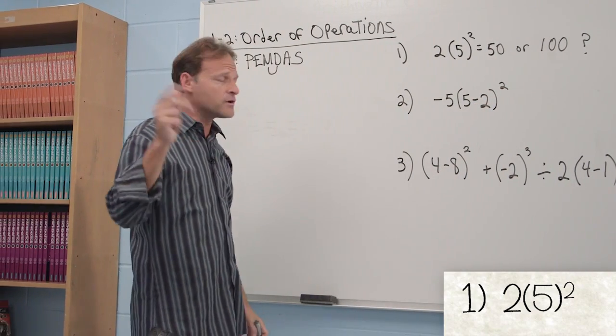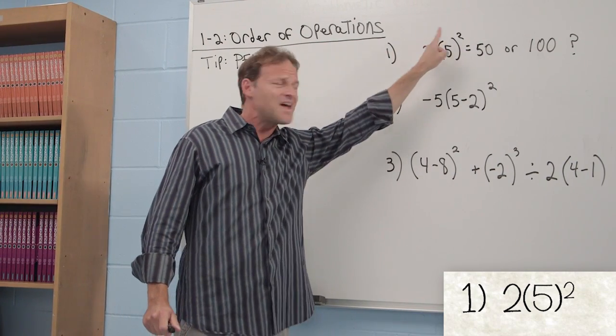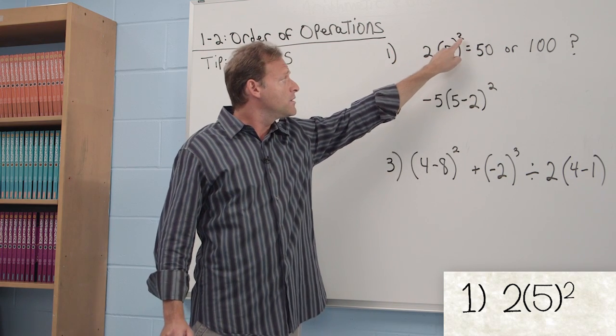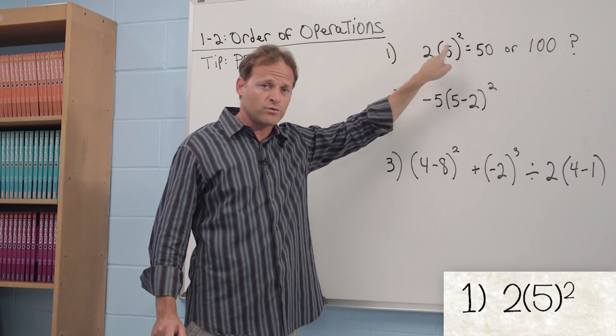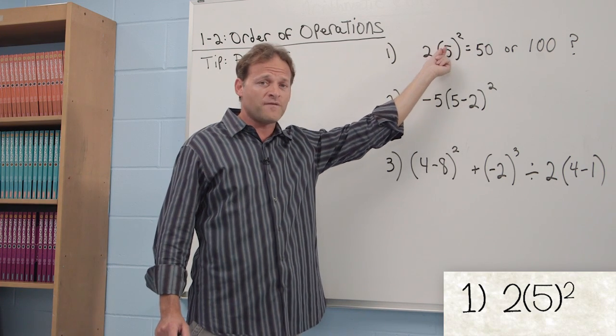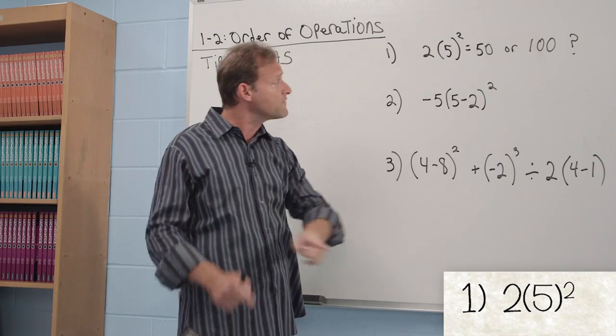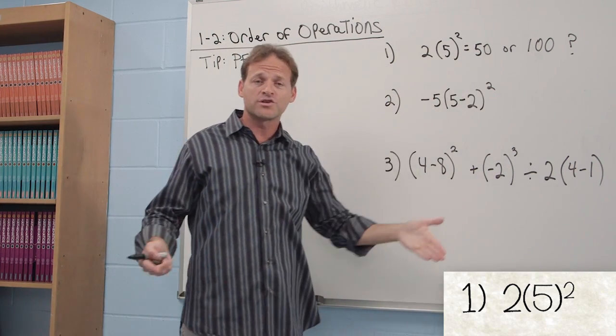Another person may say, I want to do the exponents first. I want to take care of this little thing up here first, and then I'll do multiplication. So this person would do 5 squared, since this 2 is on the 5 only. 5 times 5, which is 25, and then take that 25 and multiply it by 2, which would give 50. Which one is correct?